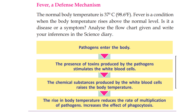The normal body temperature is 37 degrees Celsius, or 98.6 degrees Fahrenheit. When body temperature rises above normal, this is called fever.